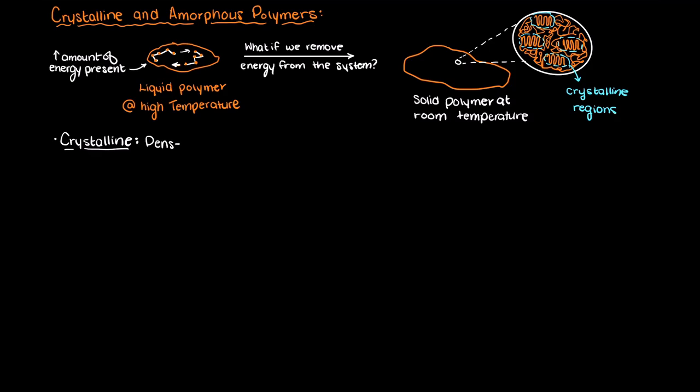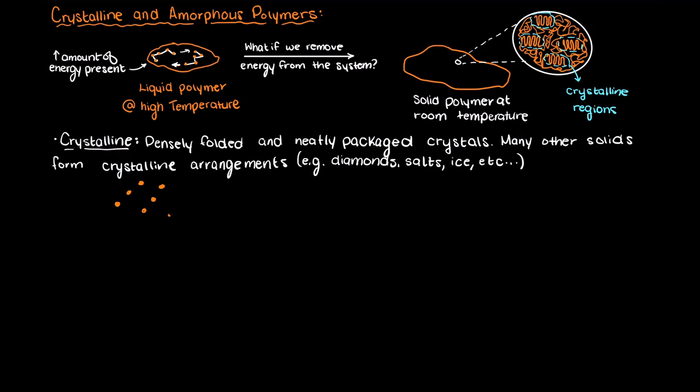Let's begin with the crystalline arrangement. Crystalline regions in a polymer are densely folded and neatly packaged crystals. They are called crystalline which stems from the area of study, crystallography. Other than polymers there are many other solids that can present crystalline molecular arrangements such as diamonds, salts, and even ice.